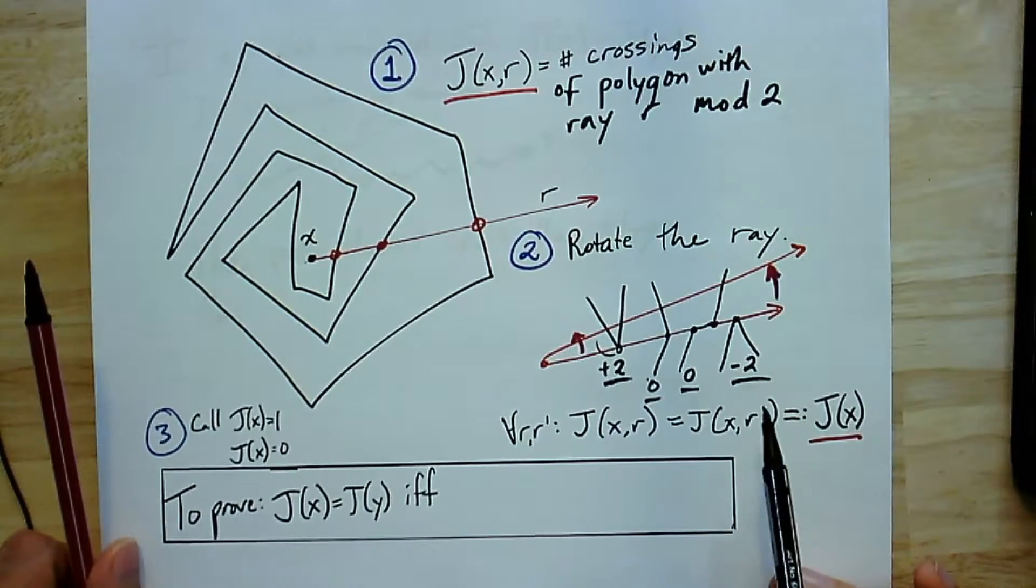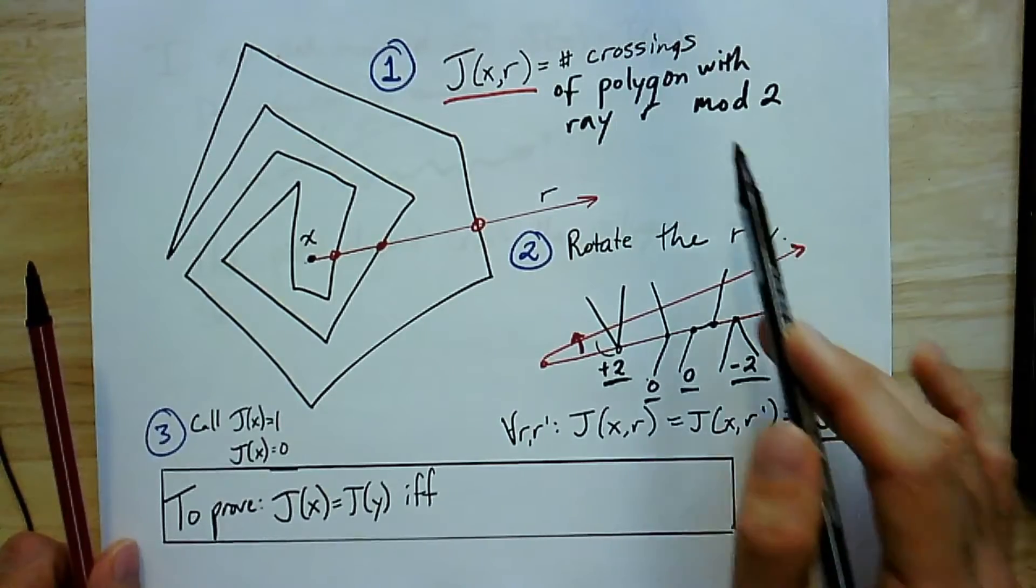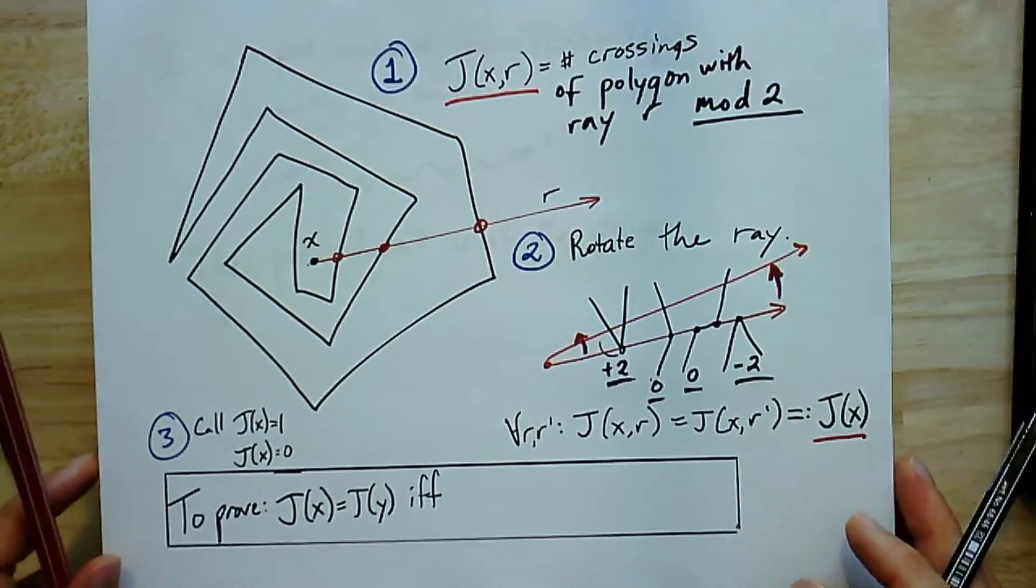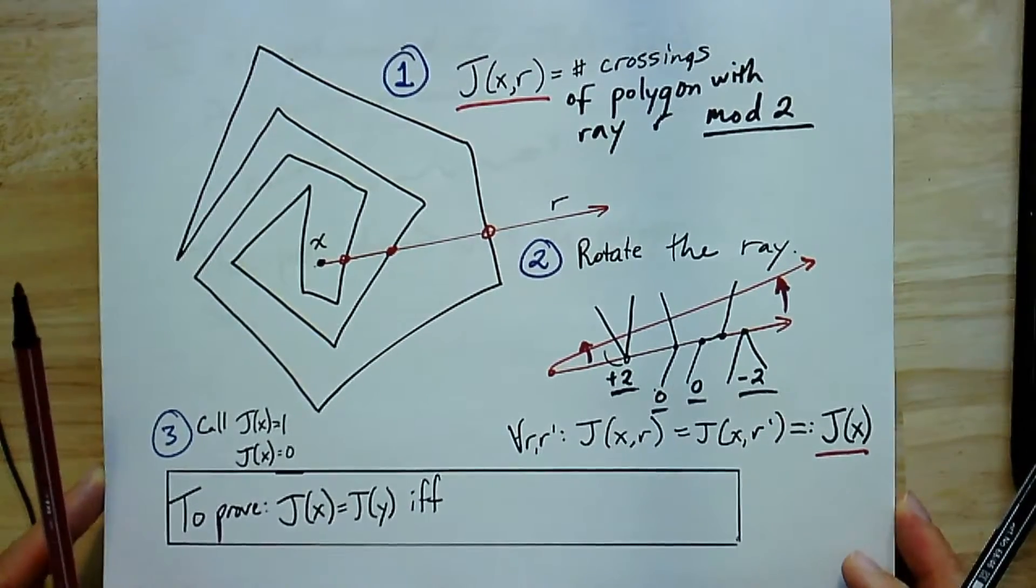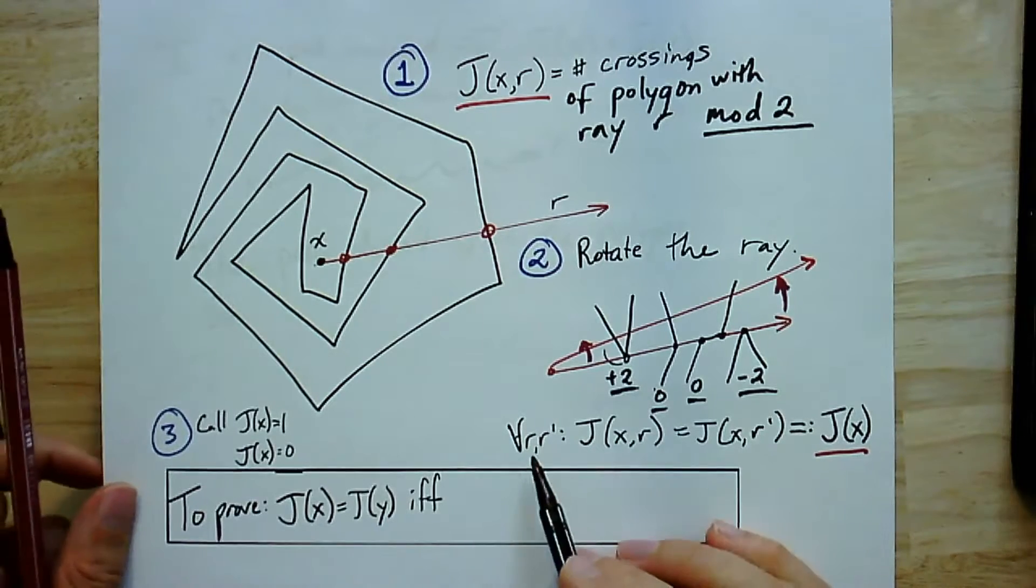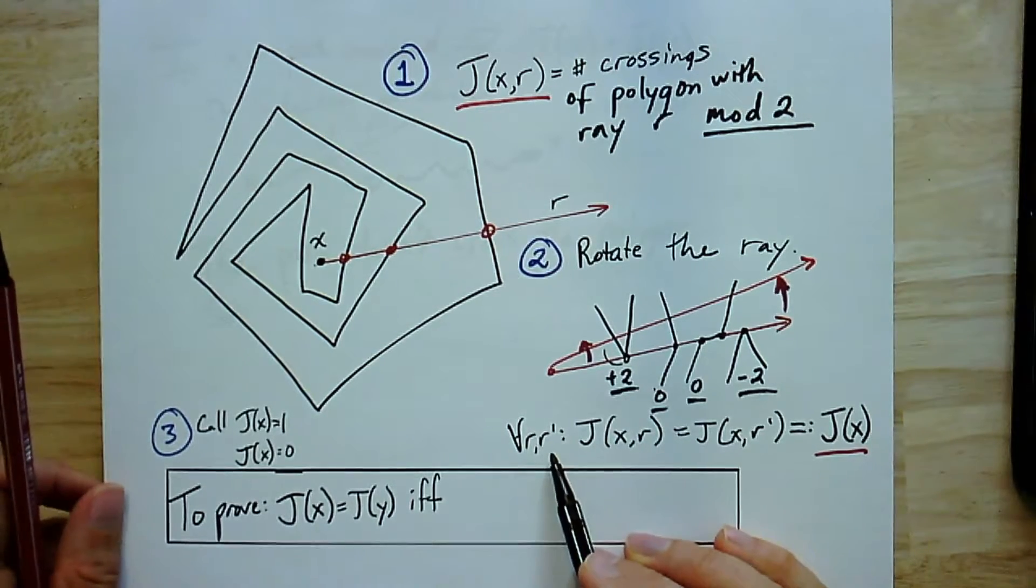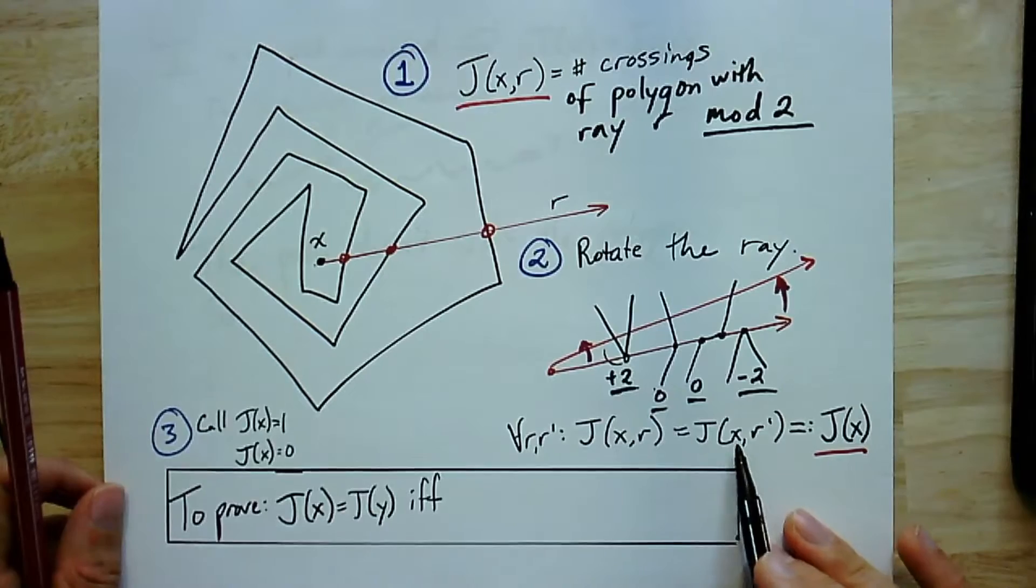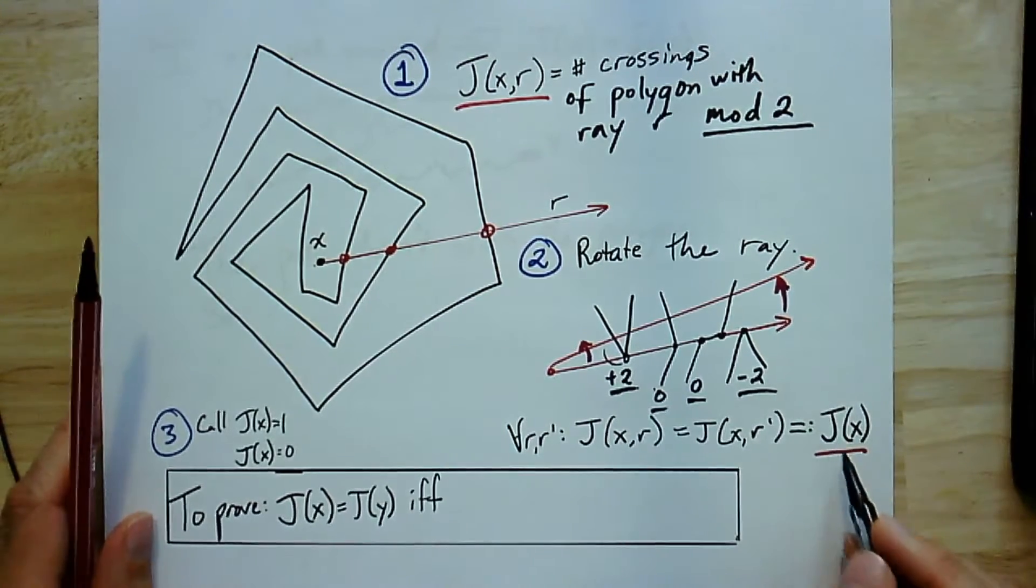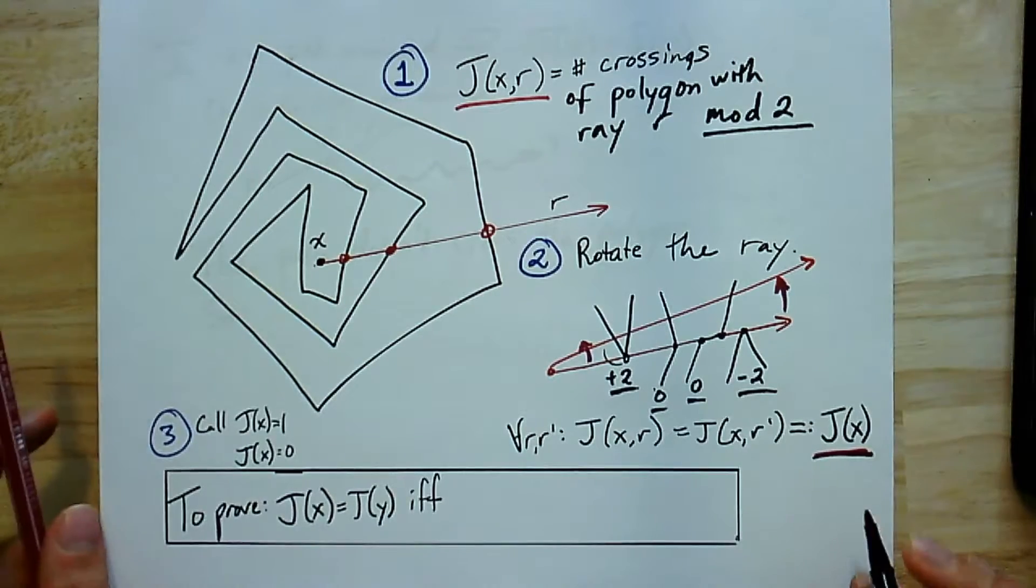Now the moral of this story is that as you rotate, any time there's a change locally, that change is either plus two, minus two, or zero. It's not much of a change at all. In terms of the number of crossings mod two, it doesn't change. So it really didn't matter what direction I shot the ray in, I'm going to get the same value. So for any pair r, r' of rays, j(x,r) equals j(x,r'). So it makes sense for us to overload this notation and just say that there's j(x).